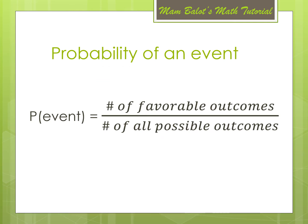Now, let us recall the formula of the probability of an event. P(event) is equal to the number of favorable outcomes divided by the number of all possible outcomes.